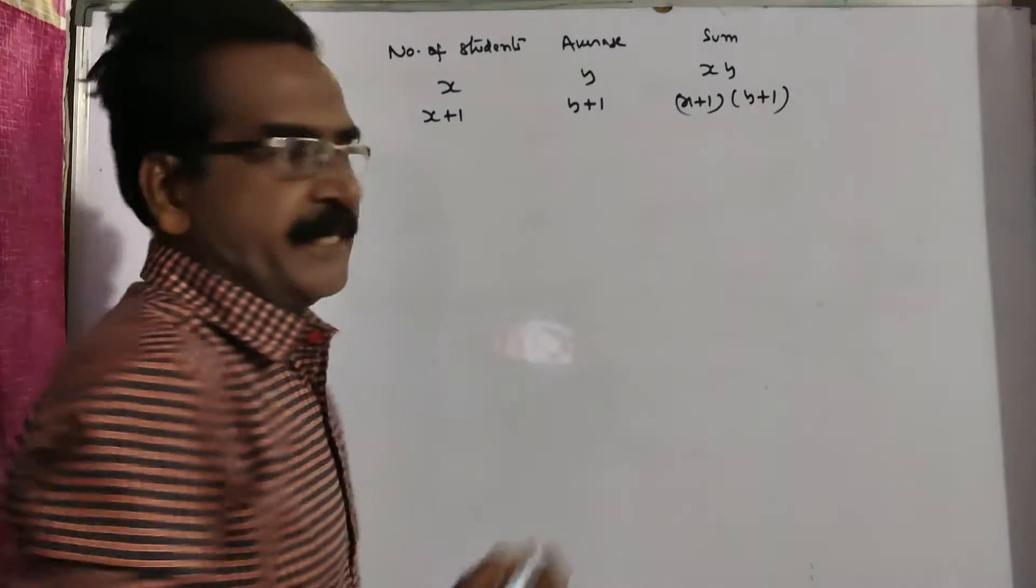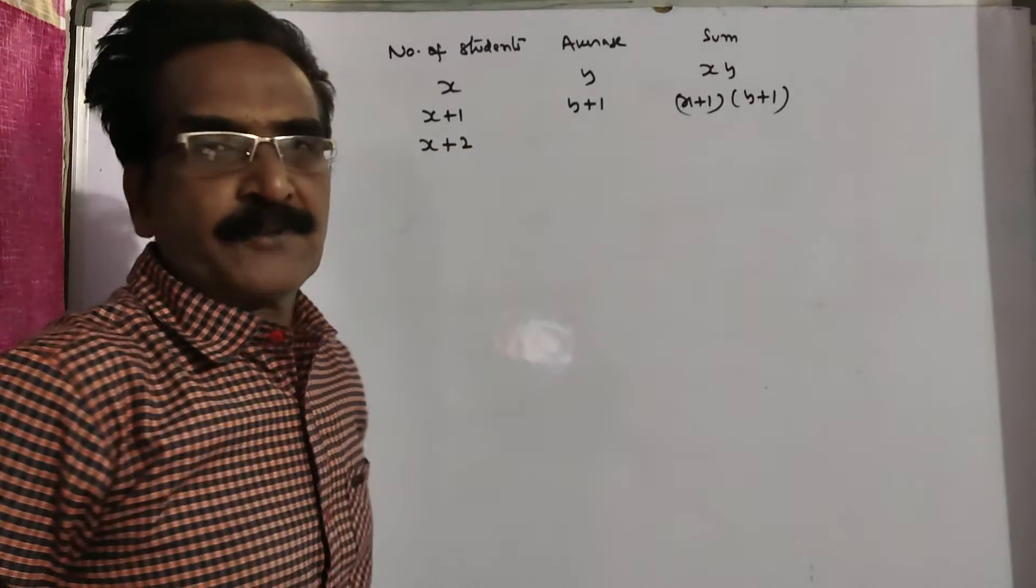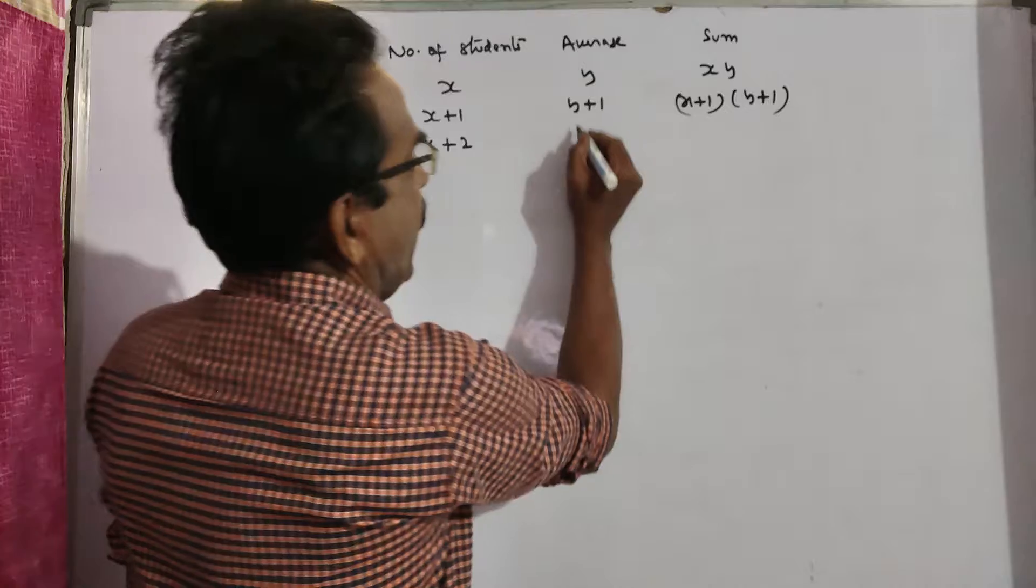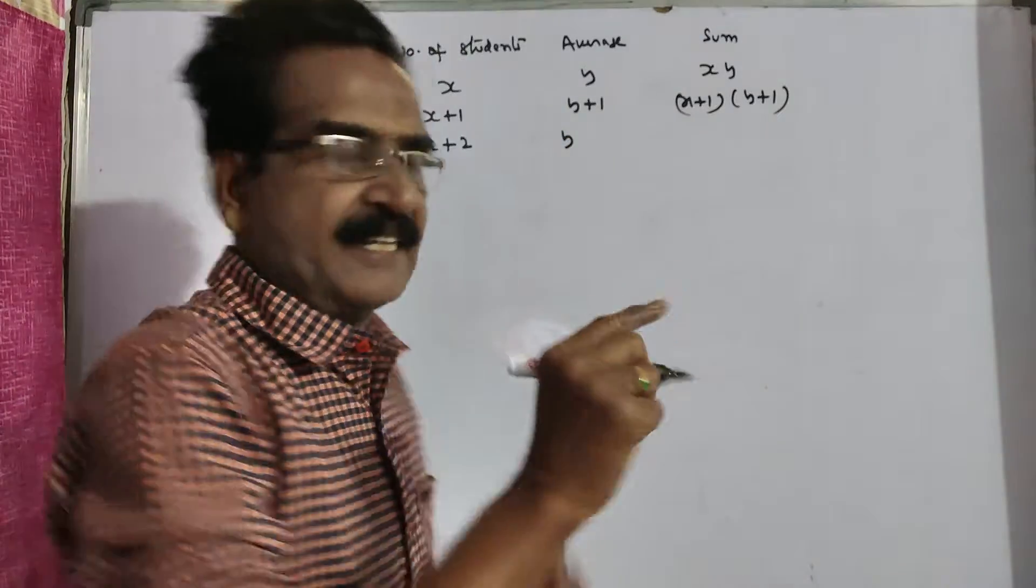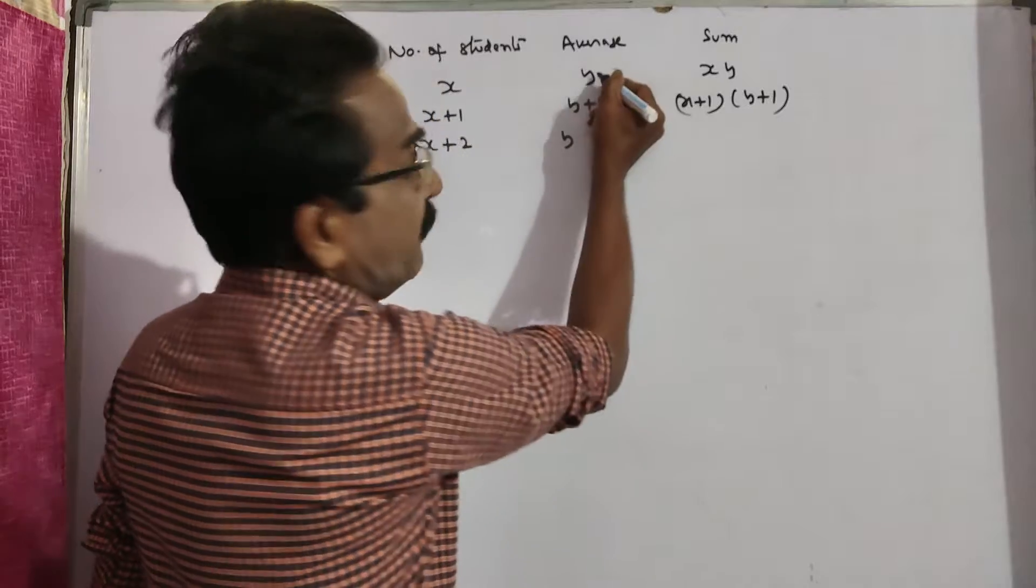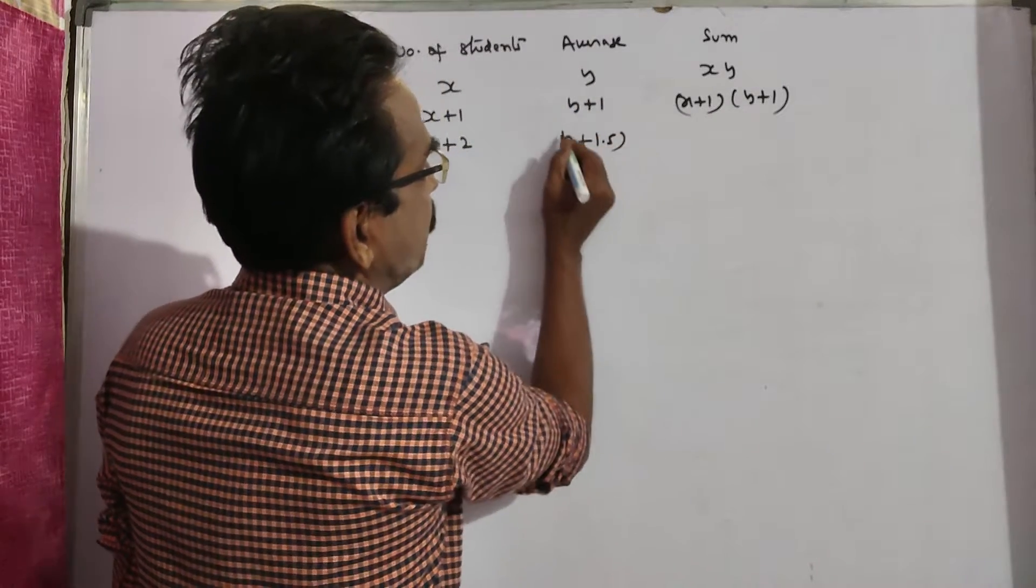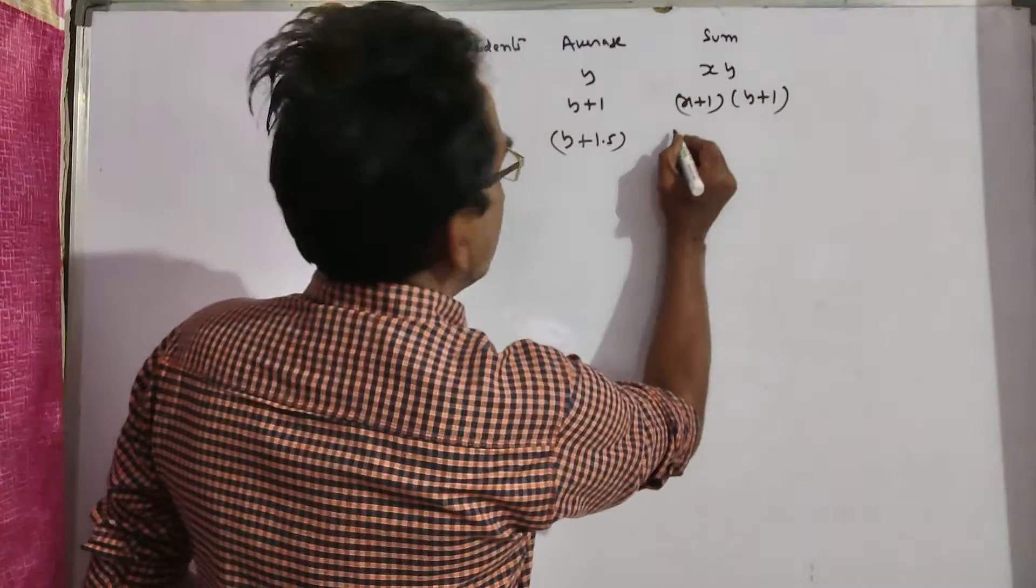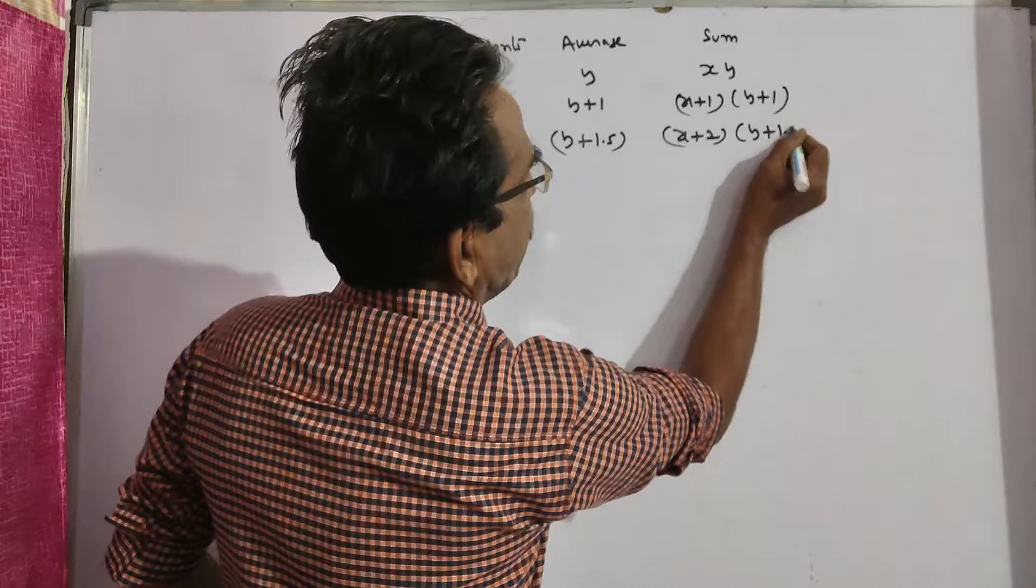Now one more student is joined. So students become x plus 2, number of students becomes x plus 2. And the average is increased by 1.5 kg over the original average. So y plus original average y, 1.5 increased by original average. Now the sum is x plus 2 into y plus 1.5.